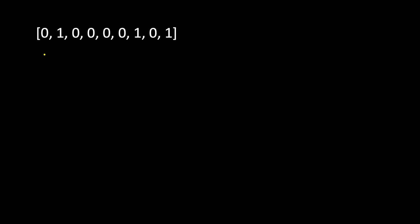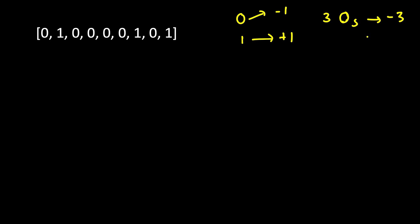The approach we will follow is: starting from the left, we keep track of a balance factor. If we encounter a 0, we do minus 1; if we encounter a 1, we do plus 1. So if three zeros occurred, they contribute minus 3; if two ones follow, they contribute plus 2, giving minus 1 overall — meaning one extra zero. When the running count equals 0, the array from the beginning to that point is balanced.